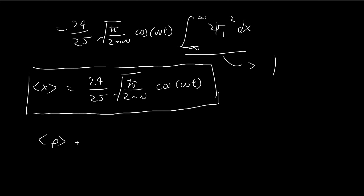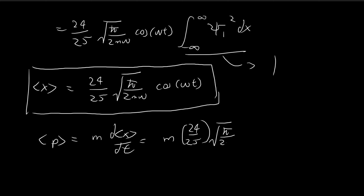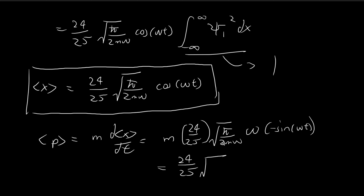Now we move on to find the expected value of p, applying the formula ⟨p⟩ = m × d⟨x⟩/dt. We take the derivative of ⟨x⟩. The only time-dependent term is cosine ωt, so differentiating gives a factor of ω, and cosine becomes negative sine ωt due to the chain rule. Combining m, ω terms simplifies the square root, giving ⟨p⟩ with a negative sine ωt factor.